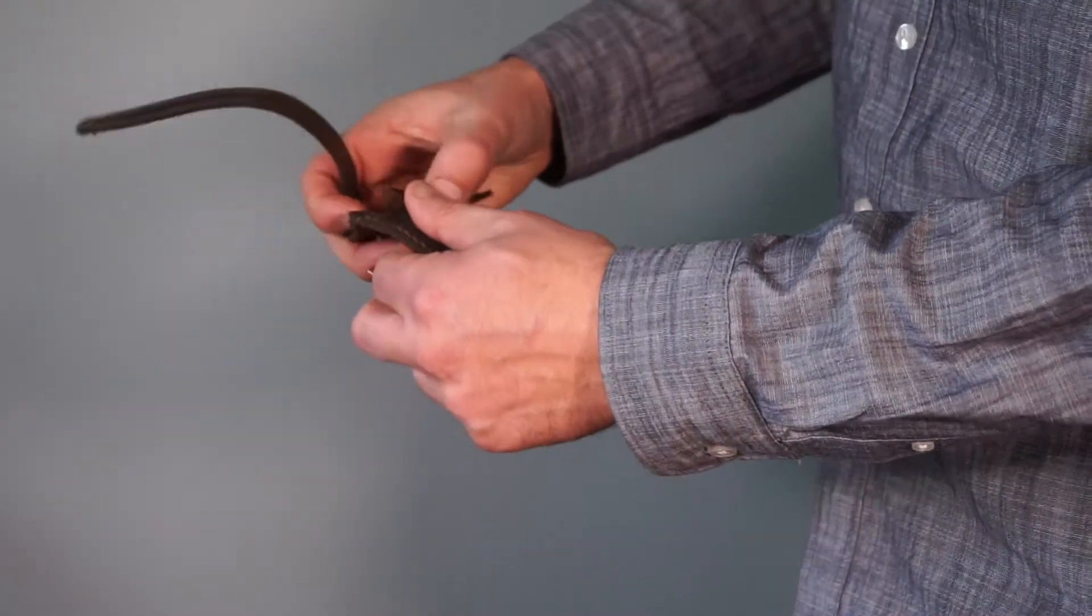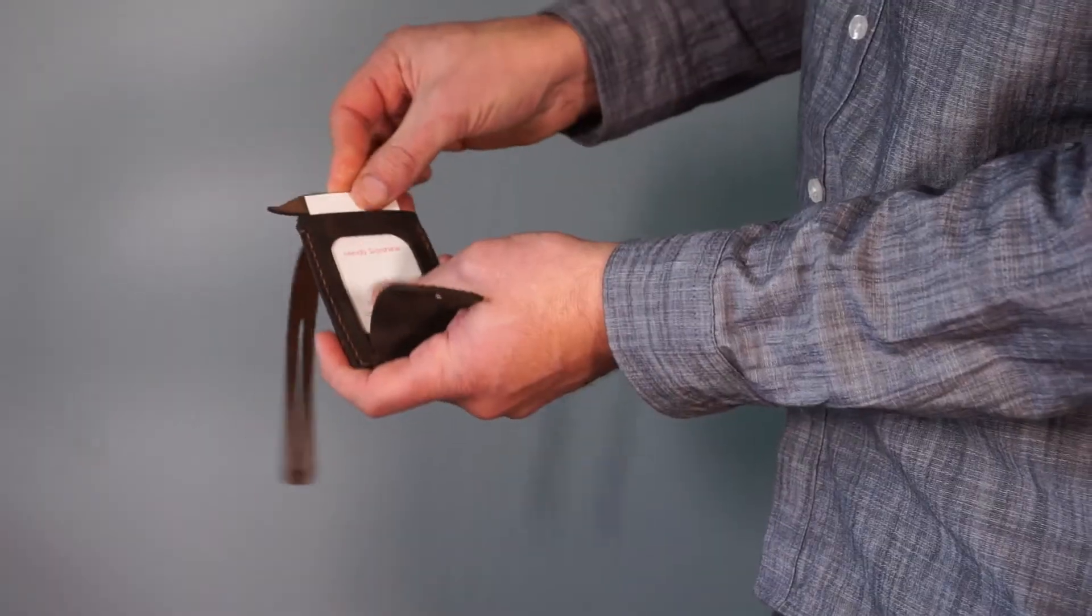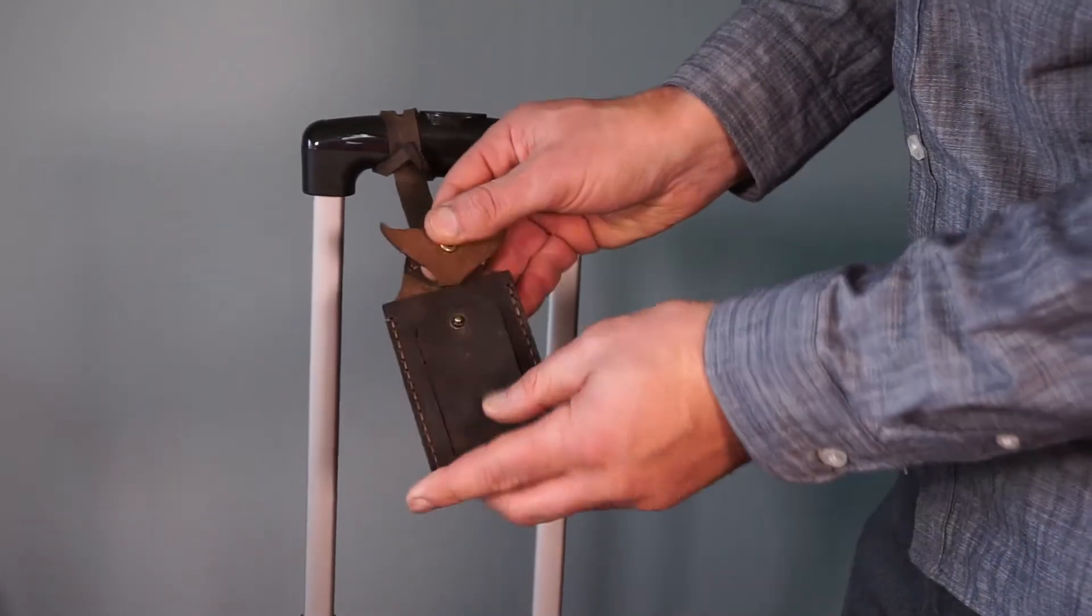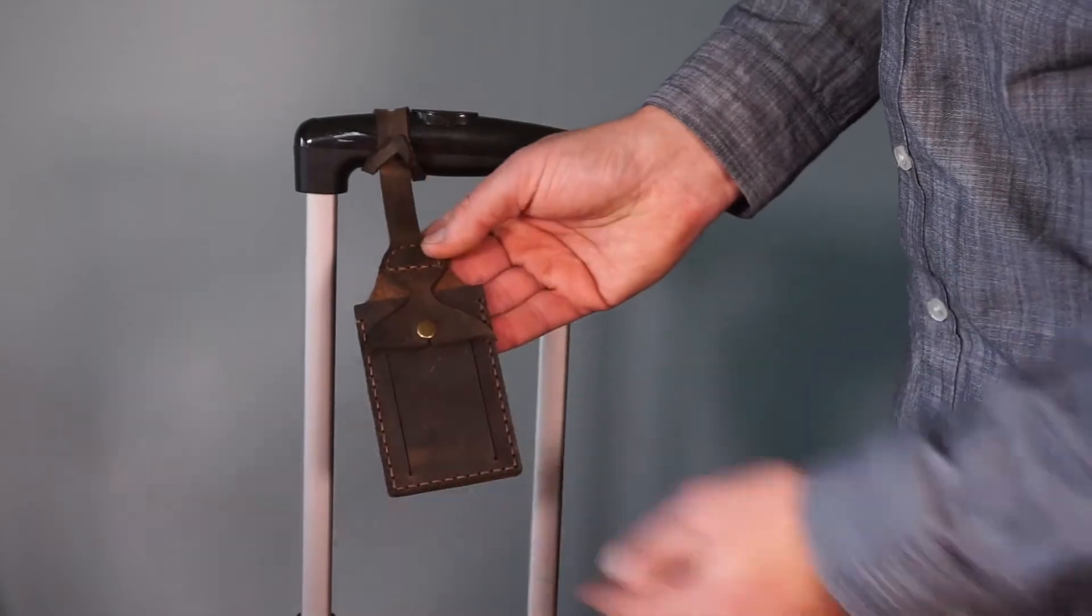Your contact information card slides in here and the tag is attached by passing it through the slot in the loop. This is a fun and easy project that will look great traveling anywhere with you.